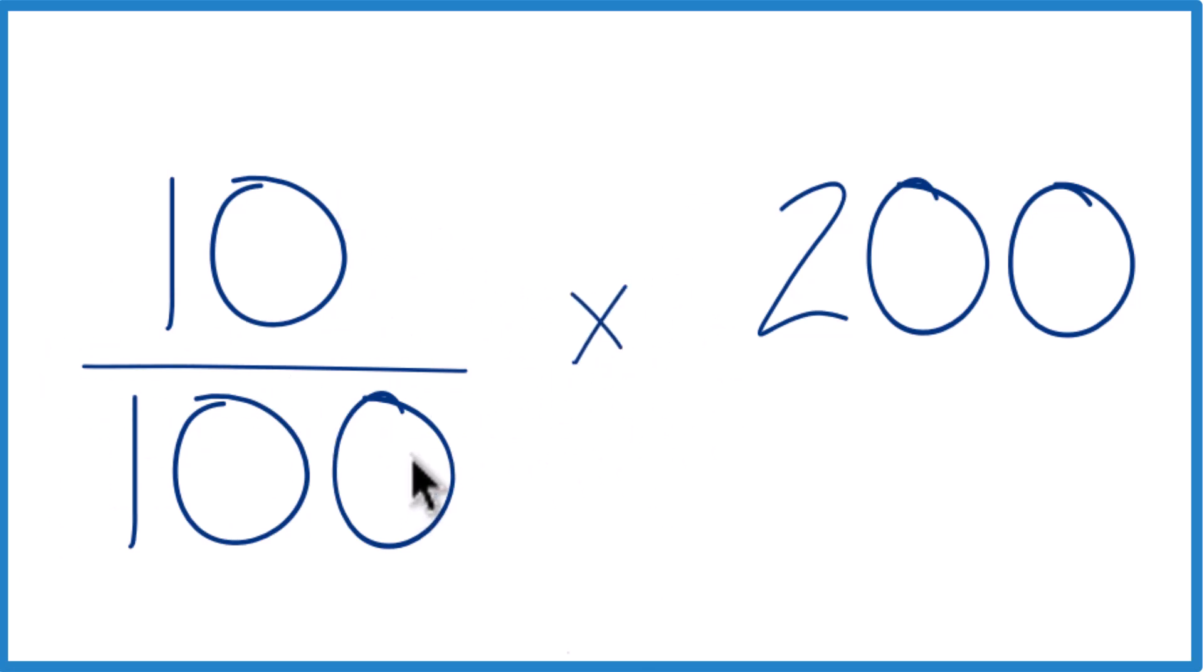So 10 over 100 is 0.1. You could just take that decimal 0.1 and multiply by 200. You'd get 20. That's one way to do it.